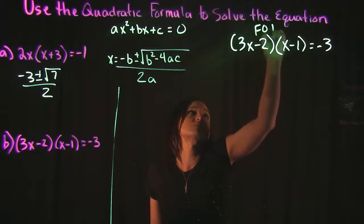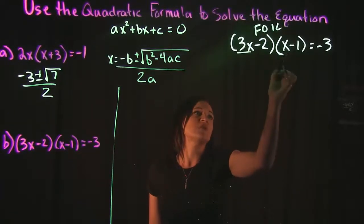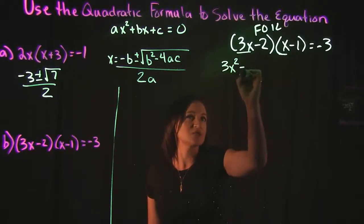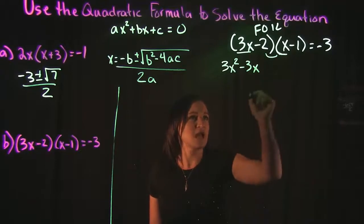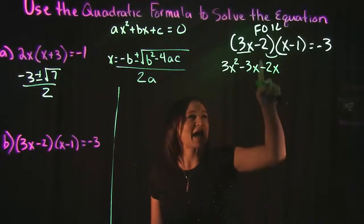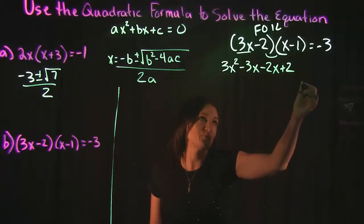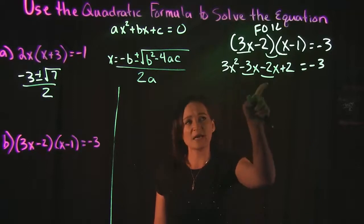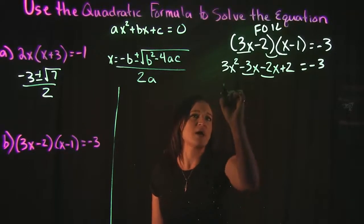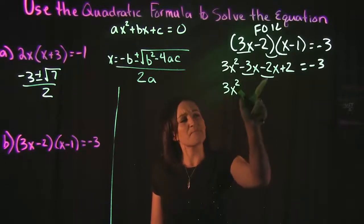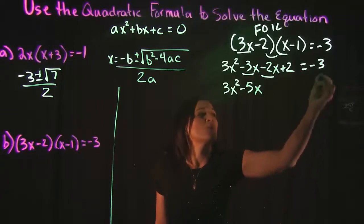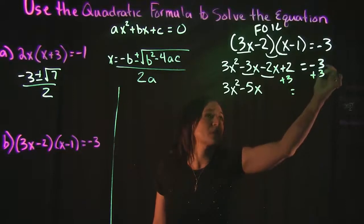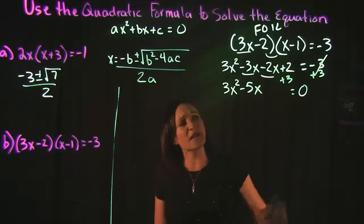Everything needs to be simplified and moved to one side, set equal to 0. Our equation is definitely not set equal to 0, and we have multiplication to clean up first. I'll use the FOIL method: first times first, 3x times x is 3x squared. Outside is negative 1 times 3x, which gives negative 3x. Inside is negative 2 times x, which is negative 2x. And last is negative 2 times negative 1, which is positive 2. That's all equal to negative 3. Now we need to combine the middle terms: negative 3x and negative 2x are like terms.